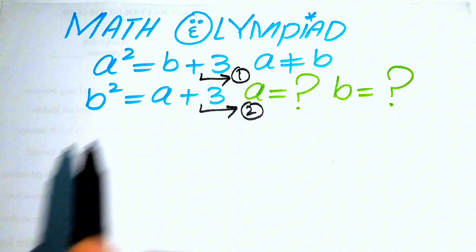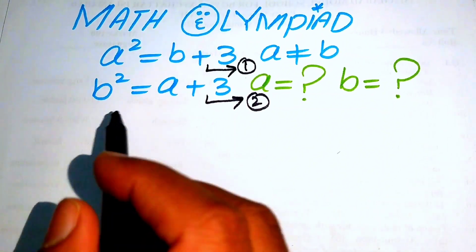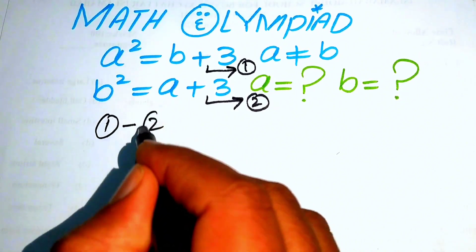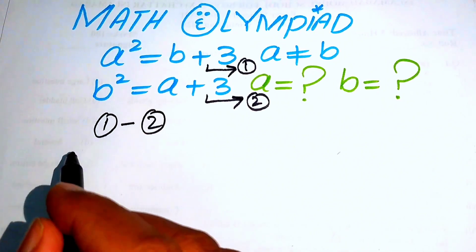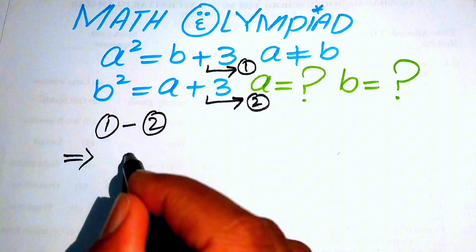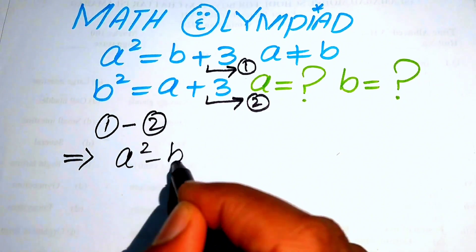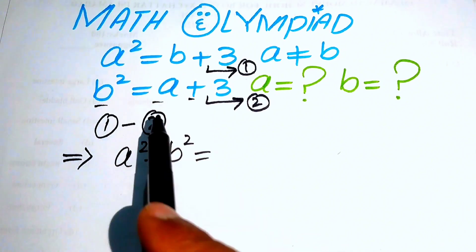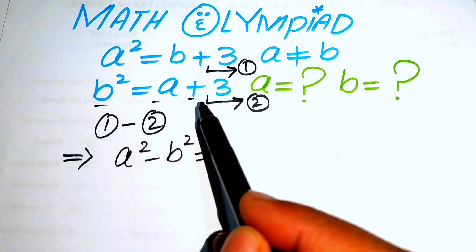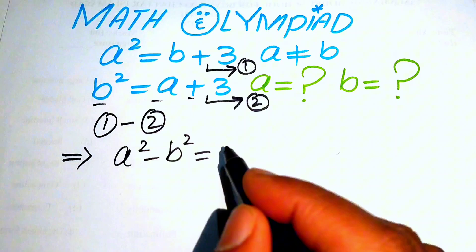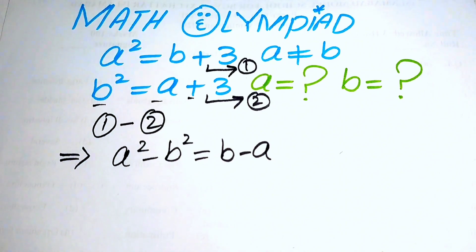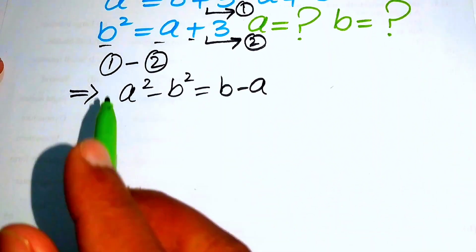We call the first equation as equation one and the second as equation two. The first thing we do is subtract equation one by equation two. When we subtract these two equations, we get a squared minus b squared equals b minus a, since the plus 3 and minus 3 cancel each other.